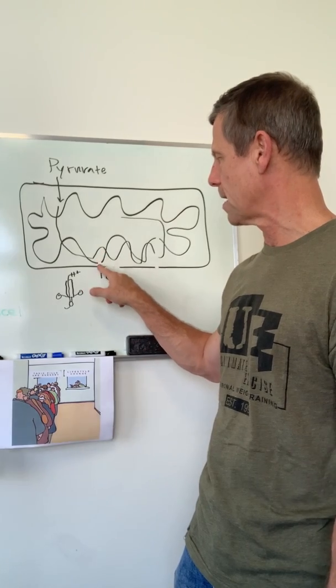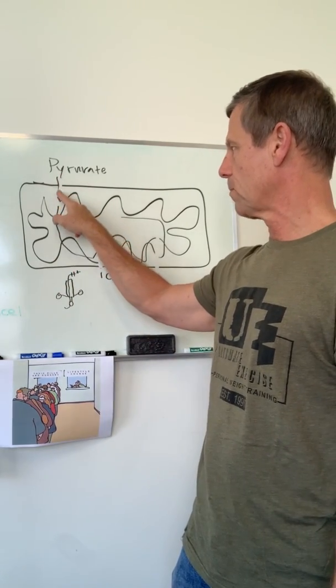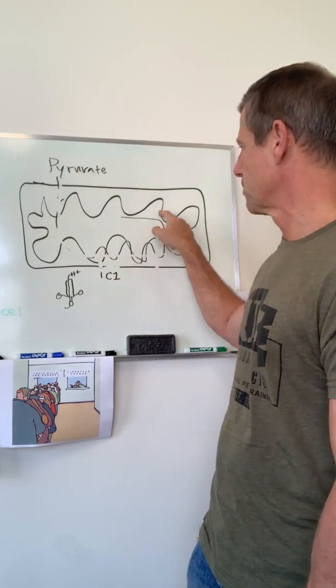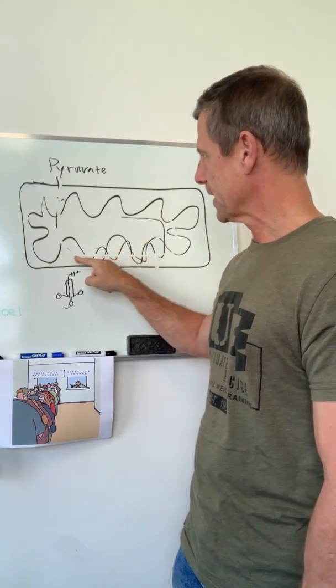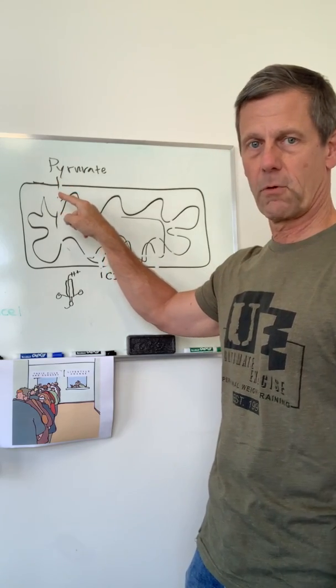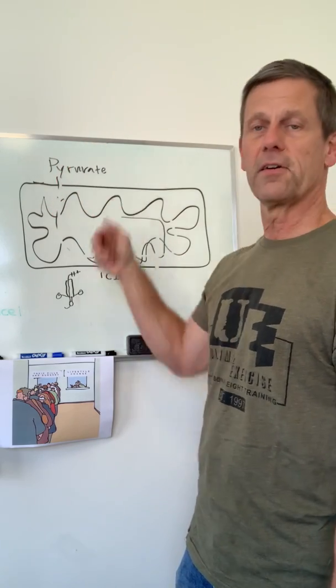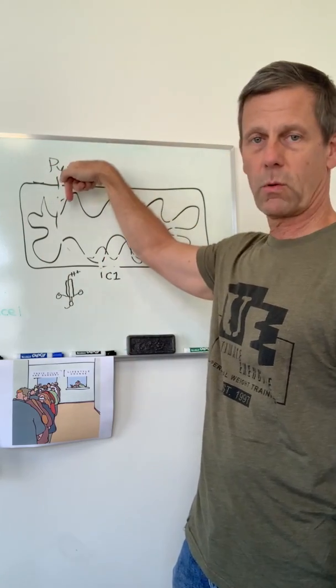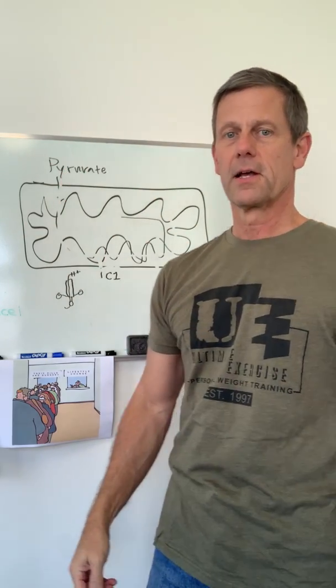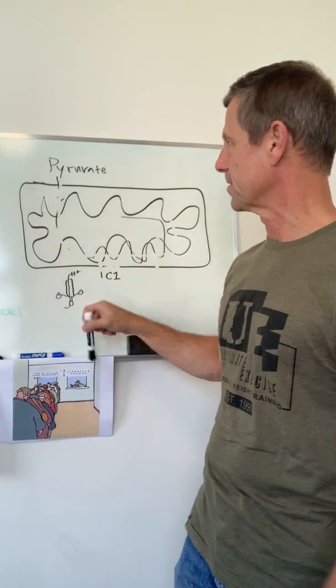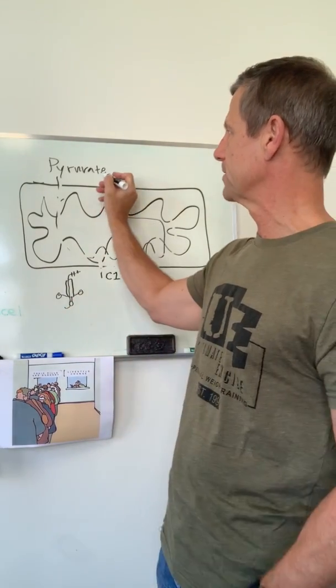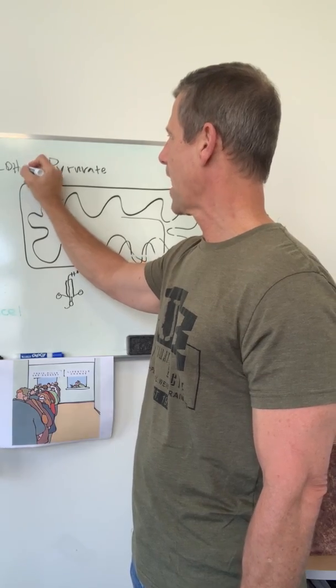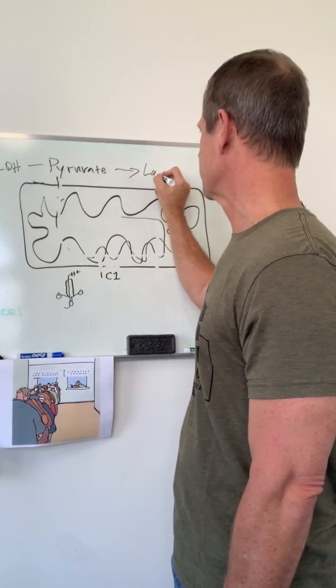However, when you bind complex 1, you somewhat slow the movement of the chemical reactions through the mitochondria. That can cause pyruvate to enter the mitochondria more slowly, and in other situations of stress, where you're delivering pyruvate more quickly to the mitochondria, you can develop a lactic acidosis because as pyruvate stacks up, lactate dehydrogenase acts upon pyruvate to make lactic acid.